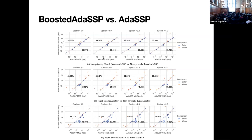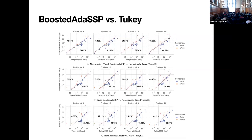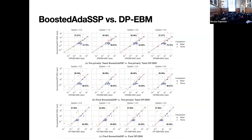We compared non-privately tuned Boosted SP to ADSP and show we do better by allowing gradient boosting to gradually reduce residuals. With fixed hyperparameters for our algorithm but tuned hyperparameters for the comparison algorithm, we can sometimes match or exceed the optimal performance of the comparison. Overall, we perform well in both conditions compared to 2Key and DPEBM.